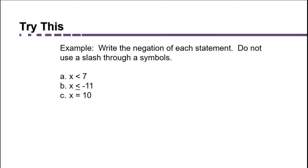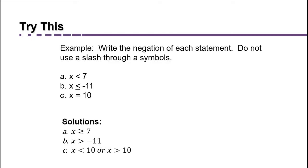Pause the video and write the negation of each statement without using a slash through the symbols. For part A: x < 7 negates to x ≥ 7. For part B: x ≤ −11 negates to x > −11. Part C is tricky: if x = 10, negating without a slash means saying either x < 10 or x > 10 — it just can't equal 10.